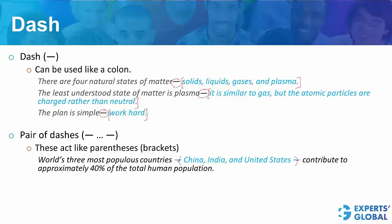And the core meaning continues. World's 3 most populous countries. You can very well skip the information between the 2 dashes here. And the core meaning is that world's 3 most populous countries contribute to approximately 40% of the total human population.